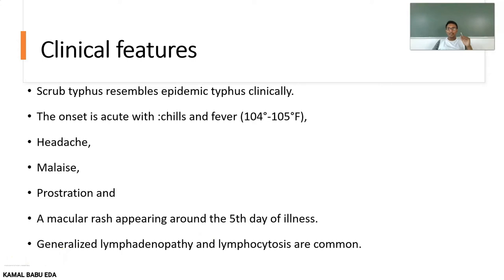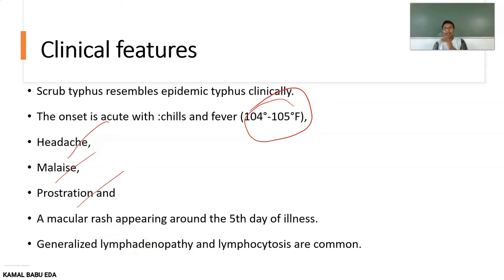The clinical features of Scrub Typhus resemble Epidemic Typhus clinically. At onset, there will be chills and fever with temperature ranging from 104 to 105 degrees Fahrenheit. Other associated symptoms include headache, malaise, prostration, a macular rash appearing on the fifth day of illness, generalized lymphadenopathy, and lymphocytosis.